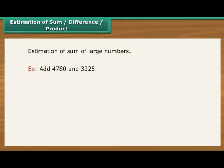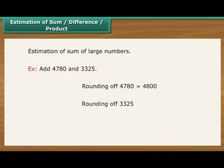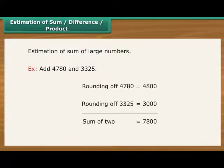Estimation of sum, difference, product. Estimation to nearest number can help in the estimation of the sum of two large numbers. For example, add 4,780 and 3,325. Rounding of 4,780 would make it 4,800. Rounding of 3,325 would make it 3,000. Sum of the two, 7,800.